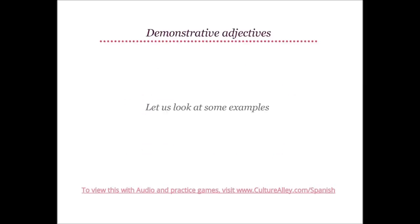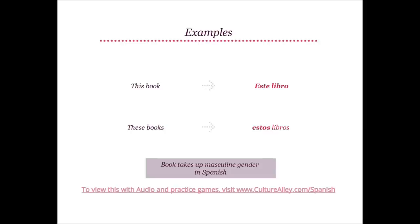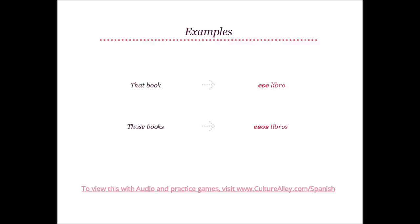Let us look at some examples. These books will become estos libros — note that 'book' takes masculine gender in Spanish. This pen is translated as esta pluma. These pens become estas plumas — remember that 'pen' takes feminine gender in Spanish. That book will be ese libro, and those books becomes esos libros.